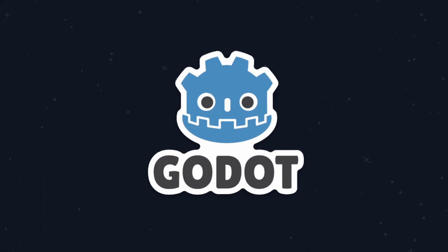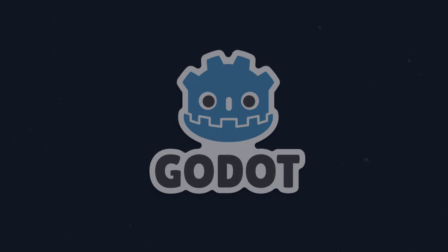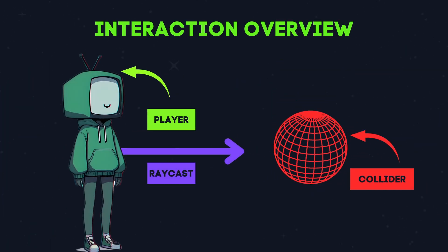Hello everyone, and welcome back to our quest and dialogue system in Godot 4 and GDScript. In this video, we will set up our player's interaction with our NPC and quest item. To do this, we will use the Raycast node that we previously added to check whether or not our player is interacting with an object in the NPC group or an object in the item group.